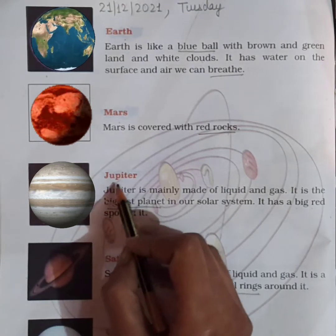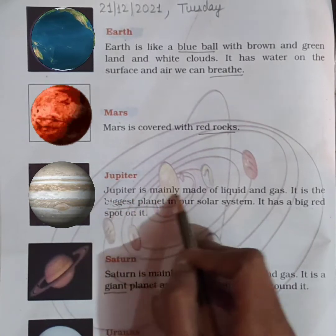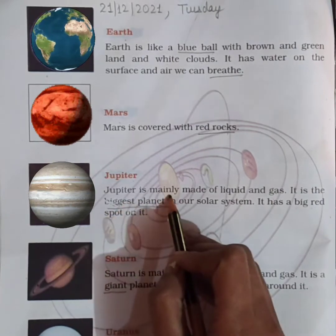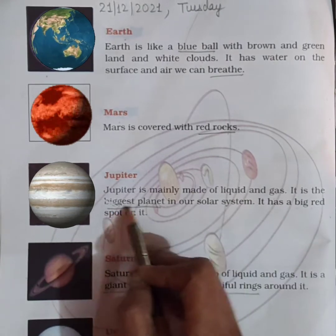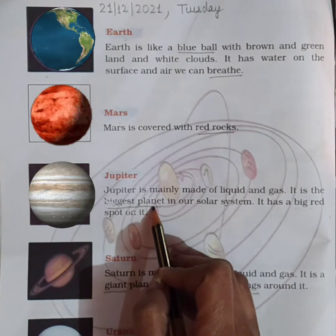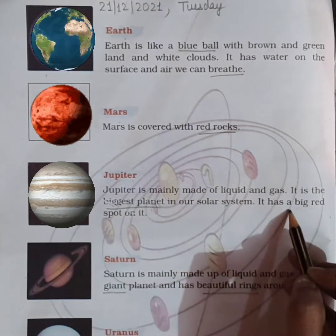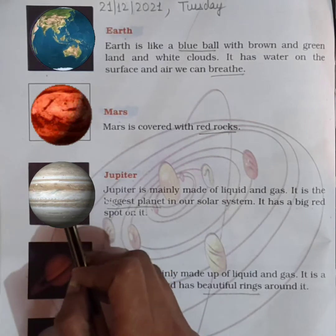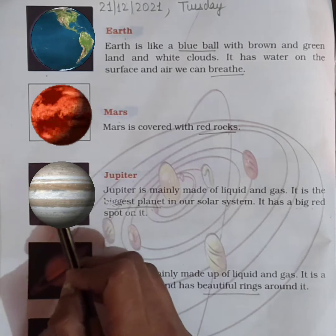The fifth planet is Jupiter. Jupiter is mainly made of liquid and gas. It is the biggest planet in our solar system — underline this: biggest planet. Jupiter has a big red spot on it, as you can see in this picture.